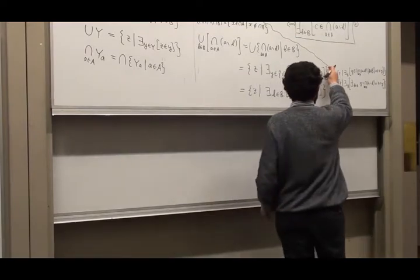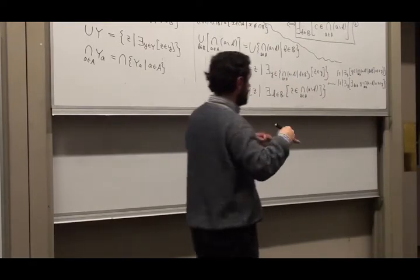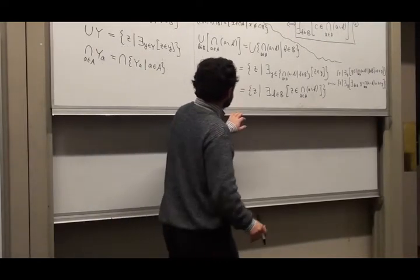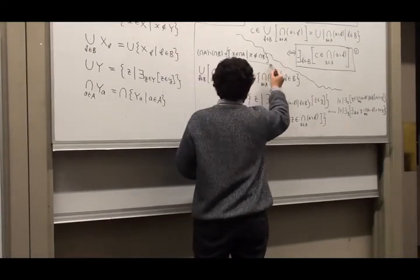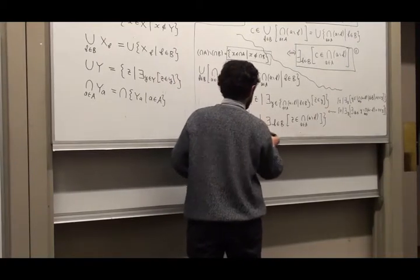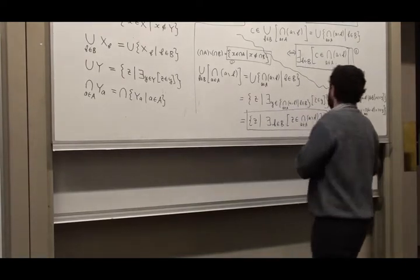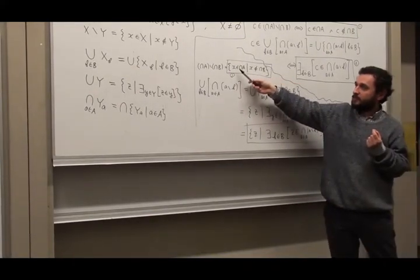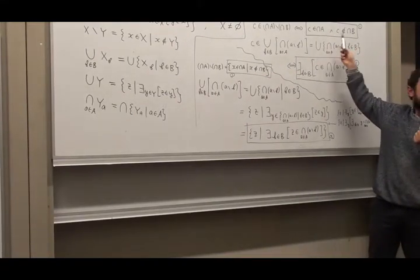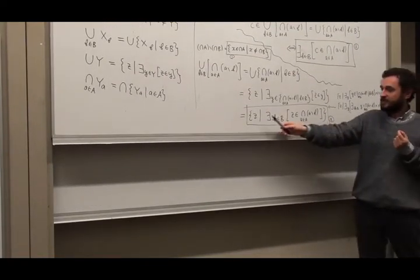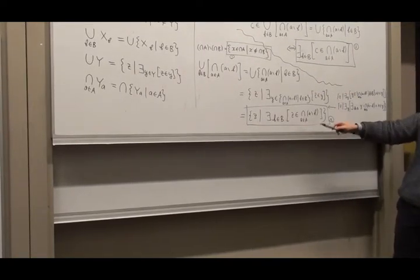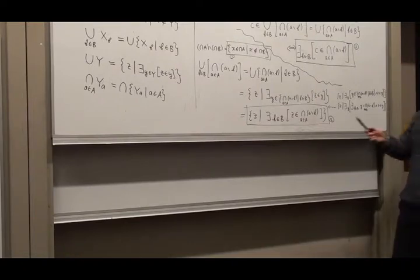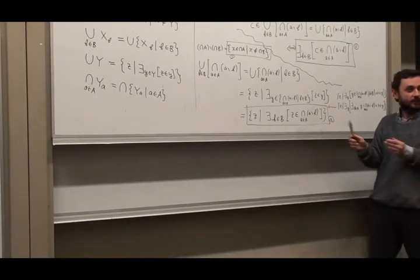We arrive at: the left-hand side equals this expression, and the right-hand side equals that expression. What does it mean for c to be an element of the left-hand side set? It means c is one of those x's — which is exactly this. And for the right-hand side, c is one of the z's — which is exactly that. Replacing z with c, we get the same form.